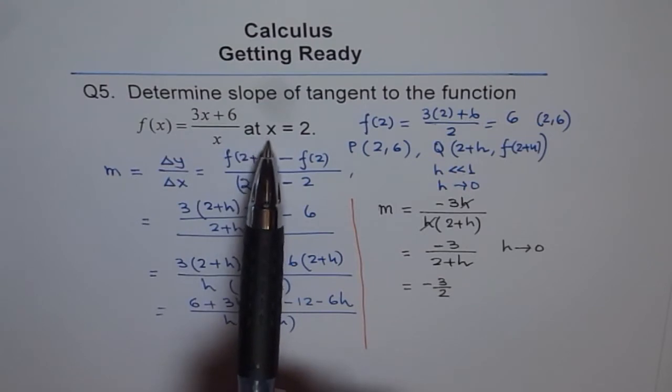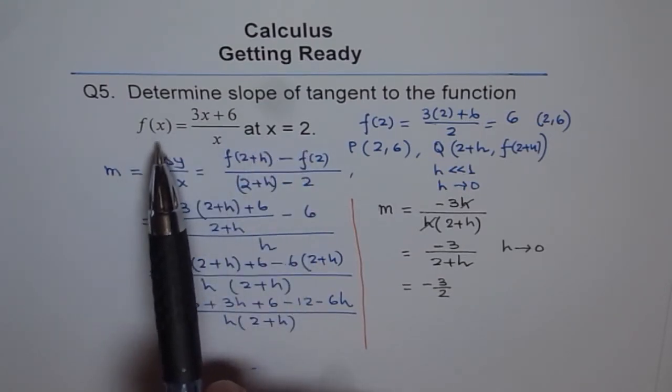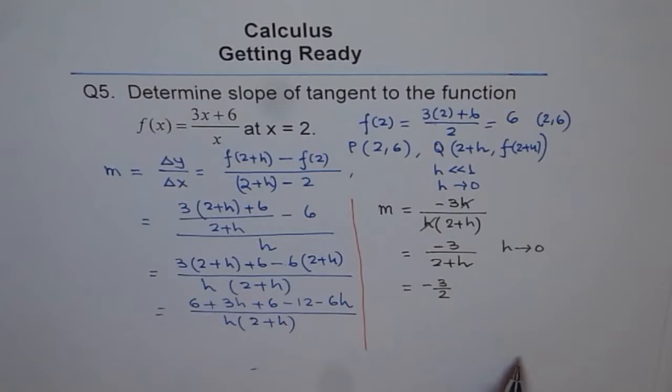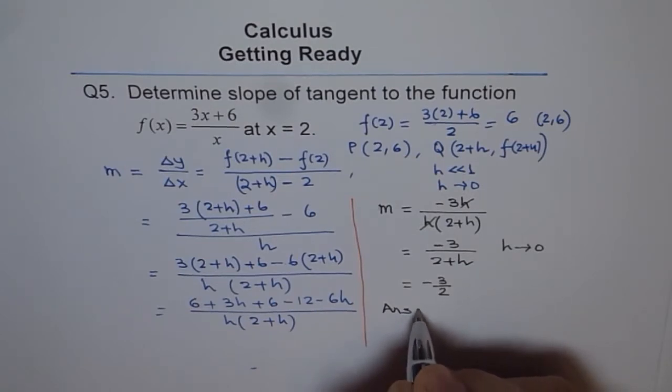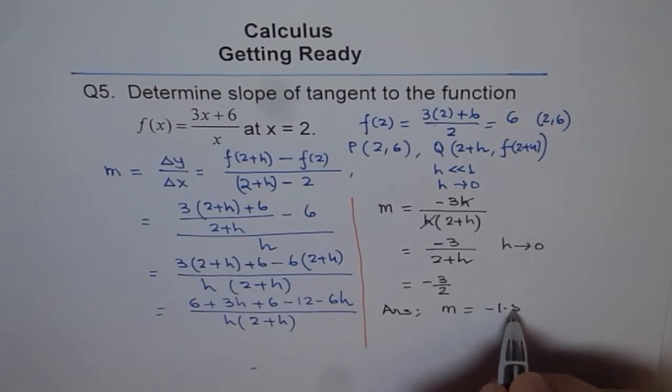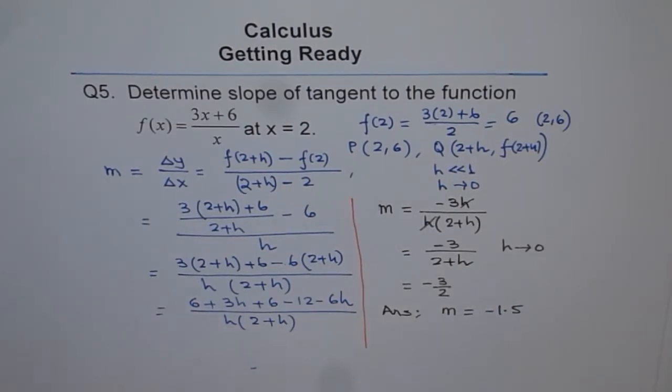At x equals 2 for the function f(x) equals (3x + 6)/x. So you can write, your answer is, m slope equals -1.5. That is your answer.